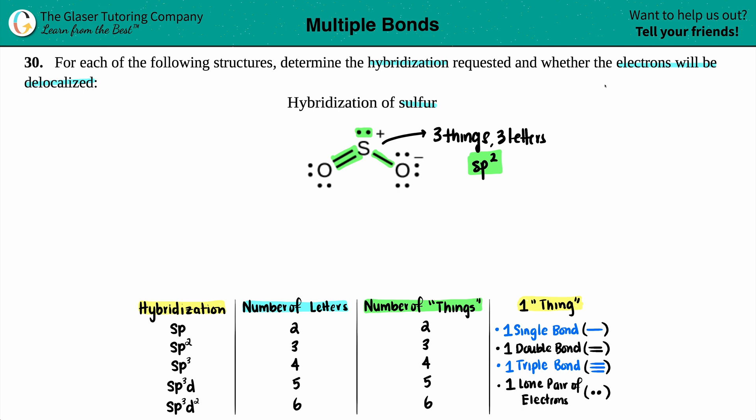Anyway, let's finish the second part of the question. We just need to know whether those electrons will be delocalized. Now, delocalized electrons is the opposite of localized electrons. If you're local, if you're staying local, you don't move out of your hometown or something like that, right? You stay put. But delocalize means that they wander.